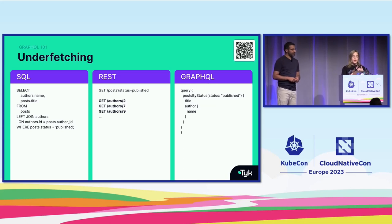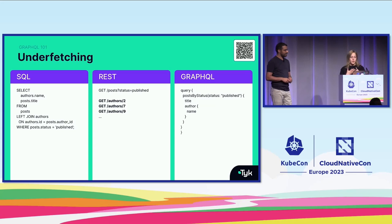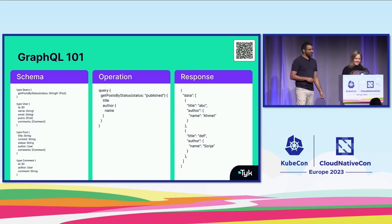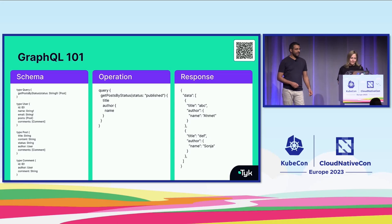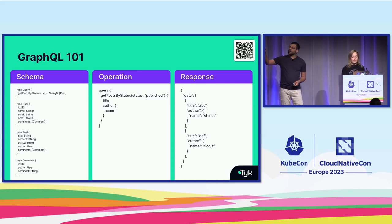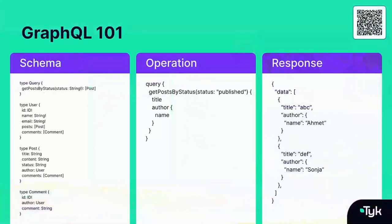Wasted bandwidth, added latency, and pain for the end users. I might need multiple entities at one time, and if each request is underfetching, we need to perform several round trips to the server to build our required data model. Every additional API call adds precious latency to each interaction, increasing the response time, and adds a lot of complexity for our customers to integrate with us.